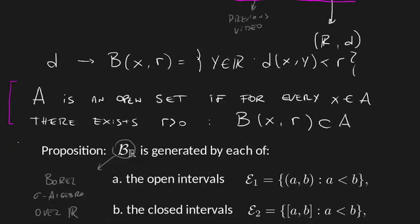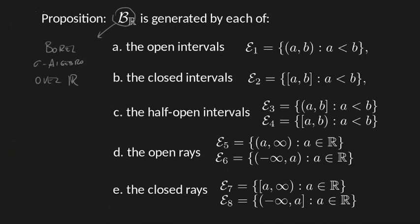And then from that we can conclude that it's actually generated by the open intervals, the closed intervals, half-open intervals, open rays, and closed rays. Half-open intervals have these two ways of representation because they can be closed and open in the left or in the right.